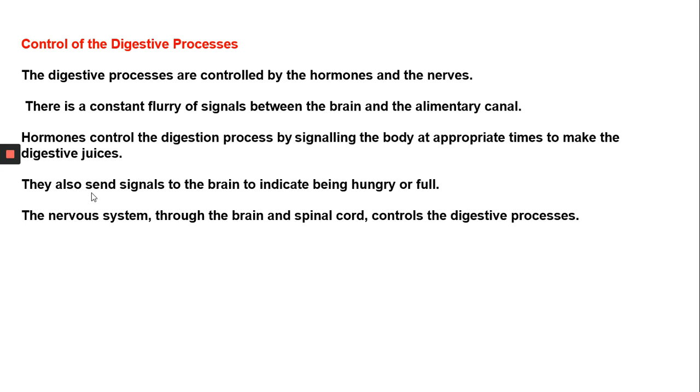The digestion process involves all these enzymes, but the brain also plays a significant role. All the information about secreting enzymes and the functioning of organs during the digestion process is controlled by the brain. The brain also controls endocrine glands, which secrete hormones. The digestive processes are controlled by both hormones and nerves — the nervous system and the hormonal system are equally important. There is a constant flow of signals between the brain and the alimentary canal.